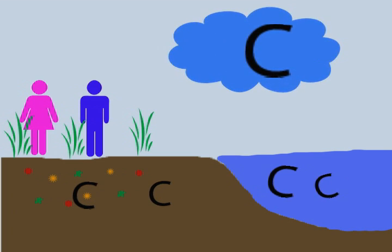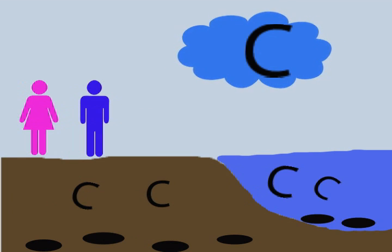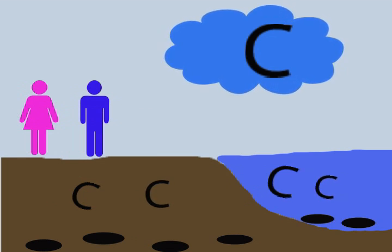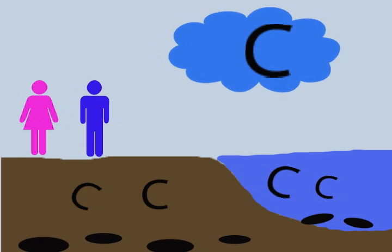Carbon also occurs in forms that are considered less accessible to living organisms. This kind of carbon, informally called old carbon, is found at the bottom of the ocean and in rocks deep below the surface of the Earth.